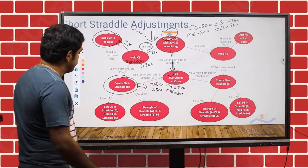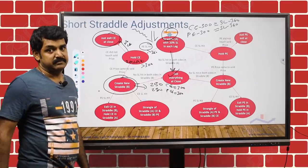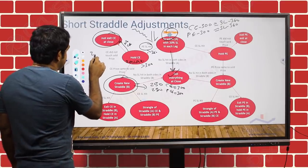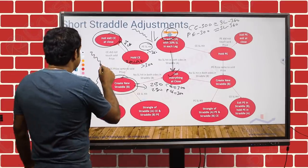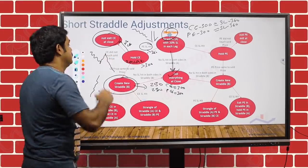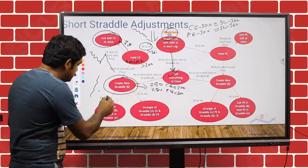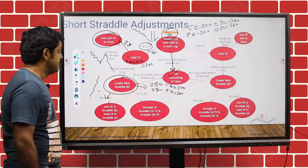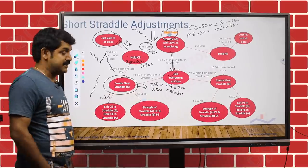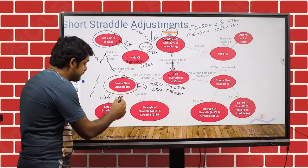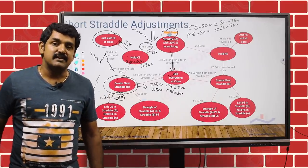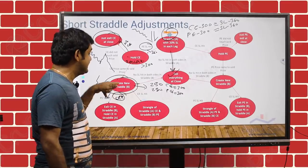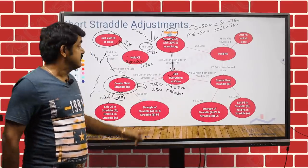Case two: the put stop loss of Straddle B is hit — meaning the market came down again. First the market came down, hit Straddle A put stop loss, then went up, so you created Straddle B, and now the market is coming down again and the put stop loss of Straddle B is hit. You still hold a call from Straddle B. So what will you do? If the put stop loss of Straddle B is hit, you need to exit the Straddle B call as well, because Straddle B was created to defend the Straddle A call.